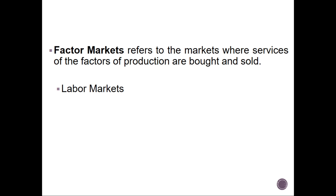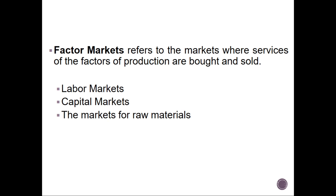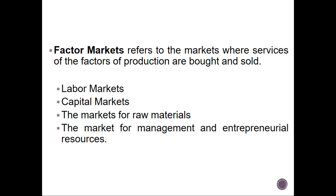Let's define factor markets. Factor markets are referred to the markets where services or the factors of production are bought and sold. The factors of production are labor, capital, land, and enterprise. We are going to look at the labor market, capital markets, the market of raw materials — which is where land comes from — and the market of management and entrepreneurial resources, where enterprise comes from.